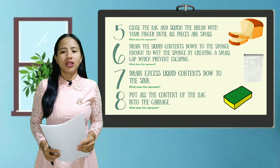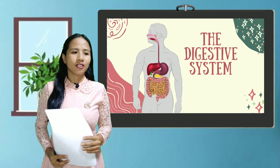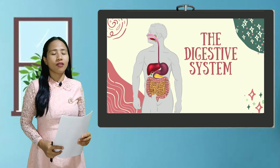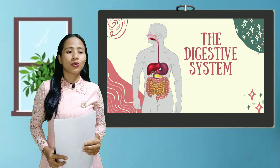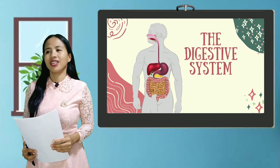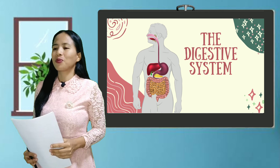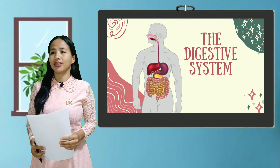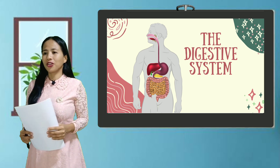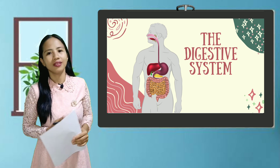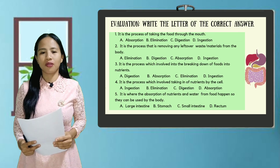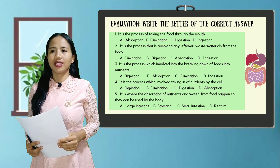Okay class, now that we're done with our activity, let's generalize all the things we've tackled today. Digestion starts when food is taken into the mouth — what do you call the process of taking food through the mouth? Ingestion. What is the process involving the breaking of food into nutrients? Digestion. What process involves the taking in of nutrients by the cell? Absorption. What is the last process that removes leftover waste materials from the body? Elimination. Now that you've learned how the digestive system works, what will you do to maintain a healthy body? Chew your foods well. Eat foods rich in fiber. Drink lots of water. Eat healthy foods. Now let's have a quiz — please get a one-fourth sheet of paper and write the letter of the correct answer. I'll give you five minutes.